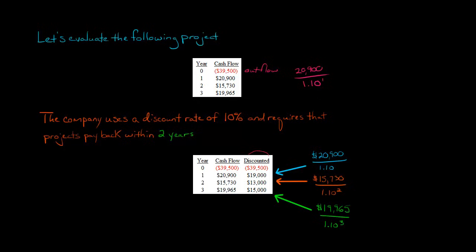So here are our discounted cash flows. Now you see that the amount for year zero is actually exactly the same because there's no reason to discount. The $39,500, we're paying that out today. So it doesn't need to be discounted because it's happening right now. But the other cash flows, they each need to be discounted.